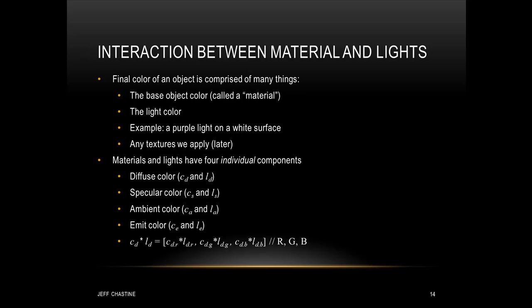So as we discussed, materials and lights each have four individual components. They have their diffuse color, their specular color, the ambient color, and the emit color. And notice how we denote these components. So for example, we have LD, LS, LA, and LE for the four lighting components for a light. Now if we were to multiply the mesh's diffuse color, which is denoted as CD, by the light's diffuse color, which is denoted as LD, we're going to do this component-wise similar to how we added vectors together. Notice the result of this operation is going to return us three components which represent the red, green, and blue of the interaction between the object's diffuse color and the light's diffuse color.